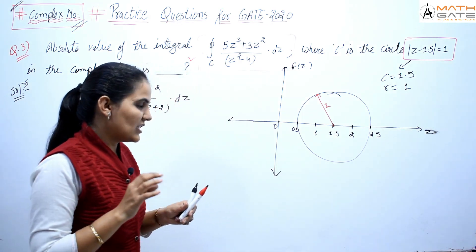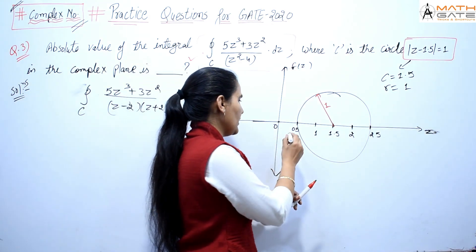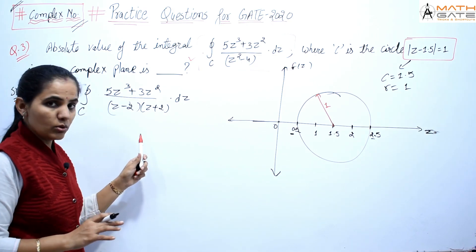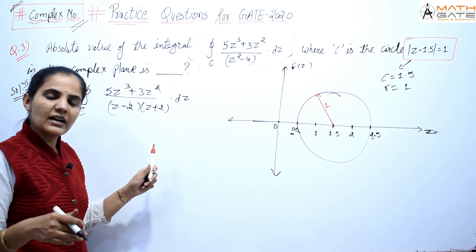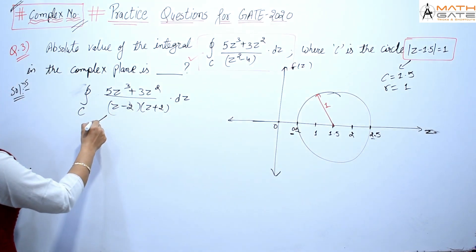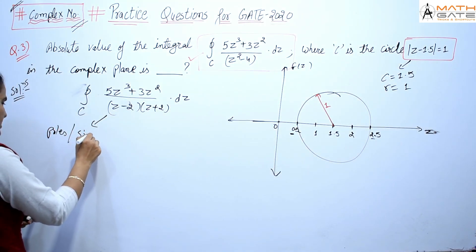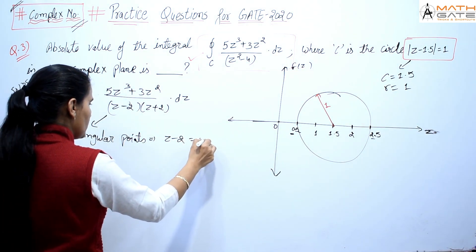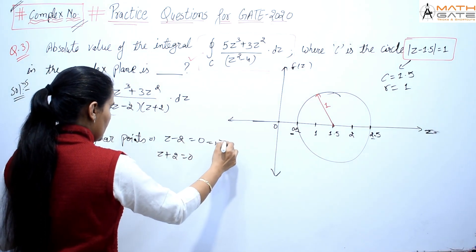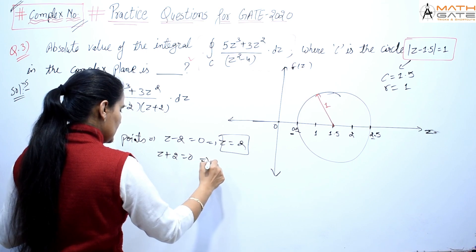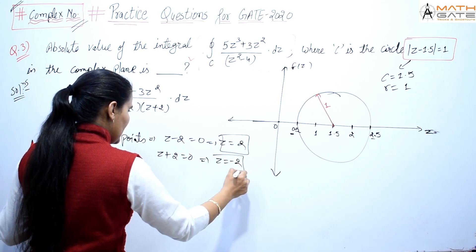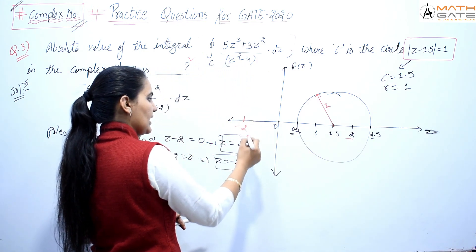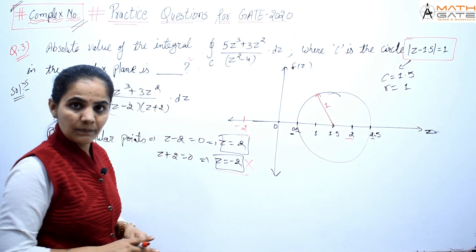Inside the circle are points between 0.5 and 2.5. Now let's find the singular points (poles). Setting z - 2 = 0 gives z = 2, and z + 2 = 0 gives z = -2. Clearly, z = 2 is inside the circle, and z = -2 is outside the circle.